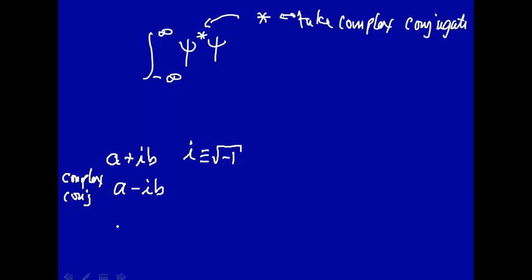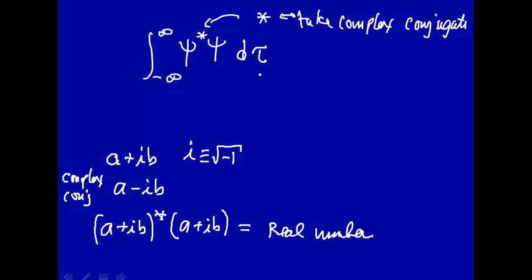And then if you take, say, a plus ib, and take the complex conjugate of that, and multiply by a plus ib, take the complex conjugate means change i to minus i, this is a real number. And that's what we want probability density to be, a real number, not an imaginary number. And then here we multiply this over some volume of space.